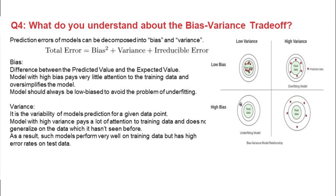We have high error when both bias and variance are high. High bias is caused when a model pays very little attention to the training data and oversimplifies the model — ideally we need low bias. Variance is the variability of the model's predictions for a given data point. High variance occurs when the model pays too much attention to the training data and does not generalize well on unseen data.